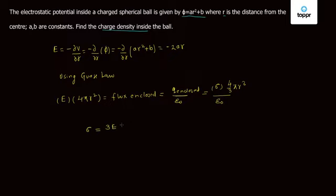Putting the value of E, we get sigma is equal to minus 6 times a epsilon 0.